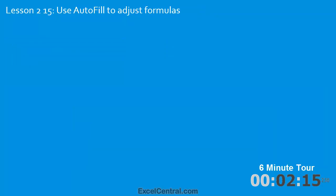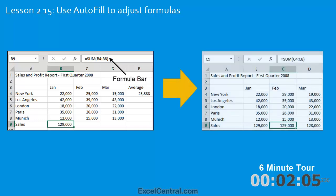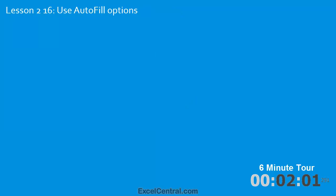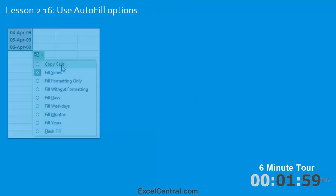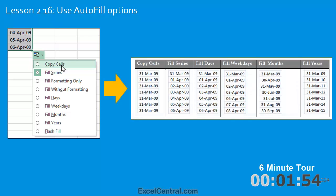In the fifteenth lesson you'll use AutoFill to adjust formulas. This unlocks a huge amount of power in Excel — you'll take the total sales for January and with a couple of mouse clicks calculate the correct formulas for the totals for February and March. In the sixteenth lesson you'll learn how to use AutoFill options and work through several examples showing all the different ways AutoFill can fill dates.